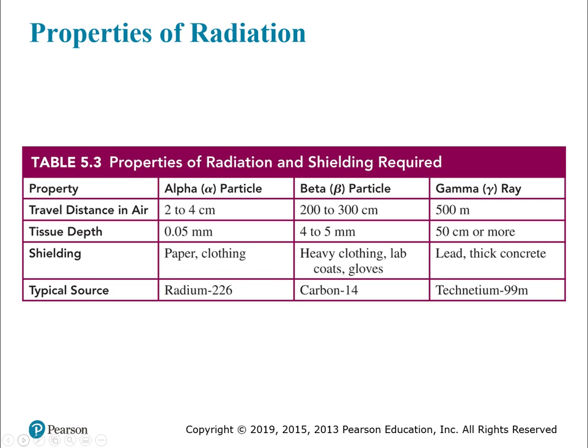This table summarizes alpha particles, beta particles, and gamma rays — how far they travel through air and tissue, the type of protective gear you need, and typical sources of these radiation types. You'll need to know this information: relatively speaking, alpha particles penetrate the least and gamma rays penetrate the most, and what shielding is required for each type.